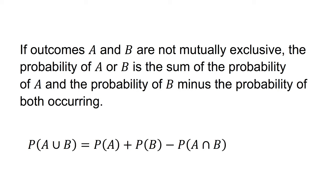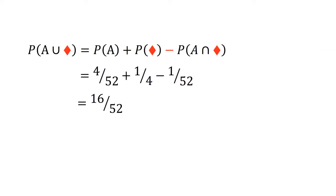If outcomes A and B are not mutually exclusive, the probability of one or the other is the sum of p(A) and p(B) minus the probability of both occurring. That is, p(A ∪ B) = p(A) + p(B) - p(A and B). For example, the probability of pulling an ace or a diamond equals p(ace) + p(diamond) - p(ace and diamond), which equals 4/52 + 1/4 - 1/52 = 16/52.